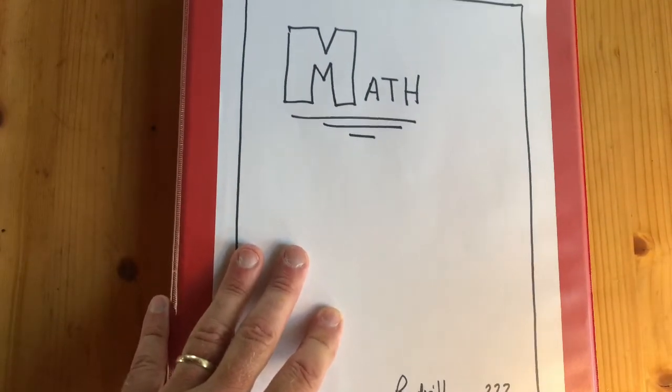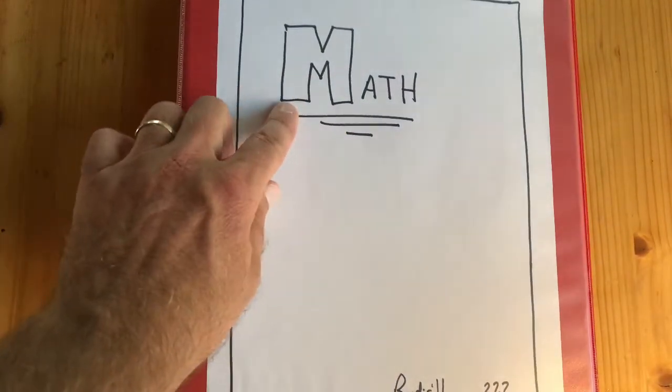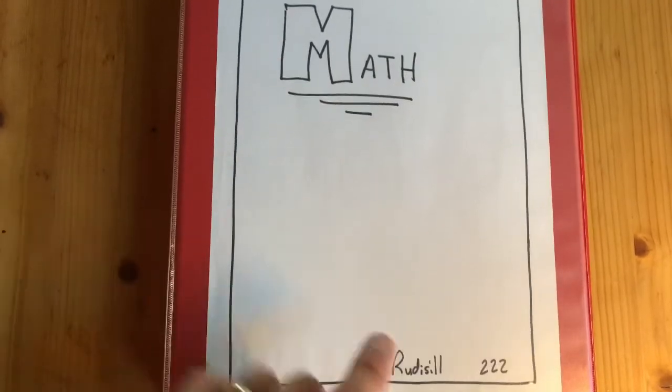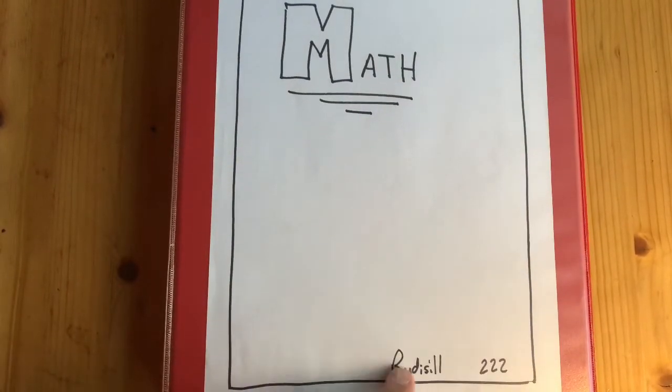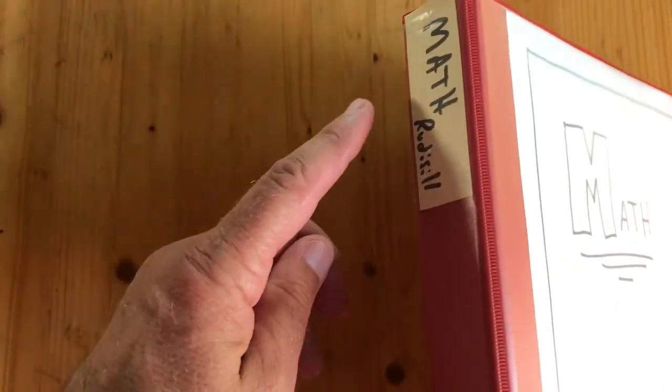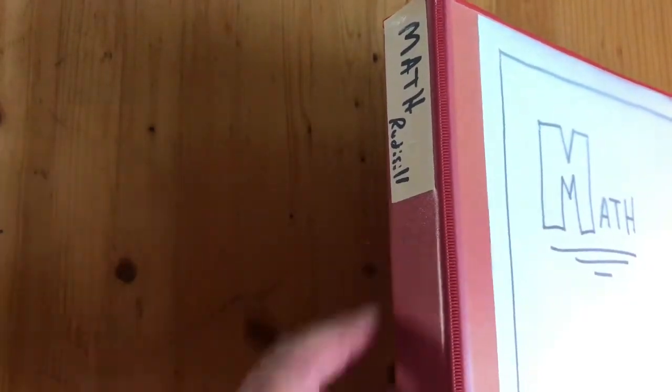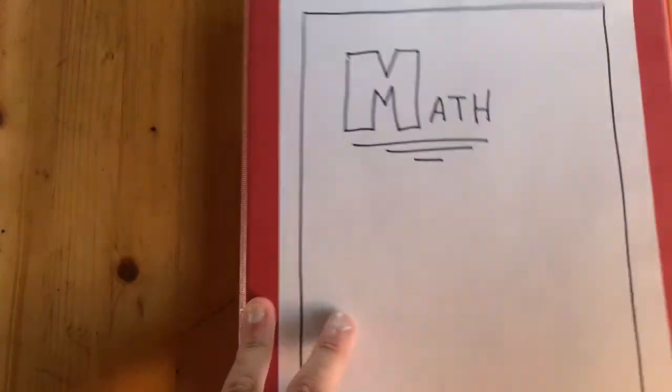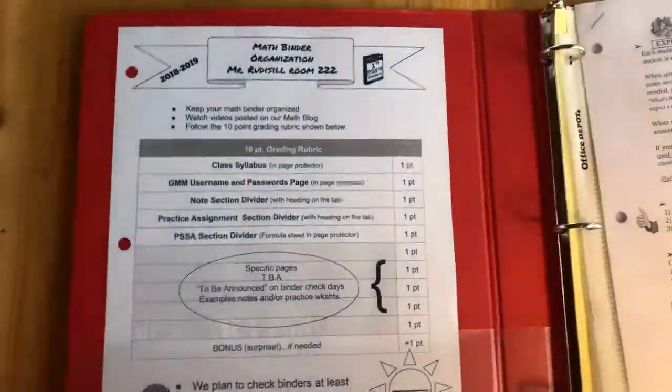Okay, for binder organization, on your front cover you want to make sure you identify it's for math class. You want to put your name on the front cover also. It's also a good idea to identify math and your name on the side too. So we'll open it up inside the front cover.